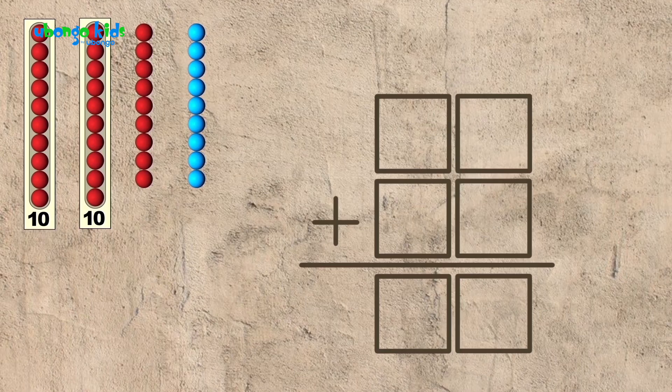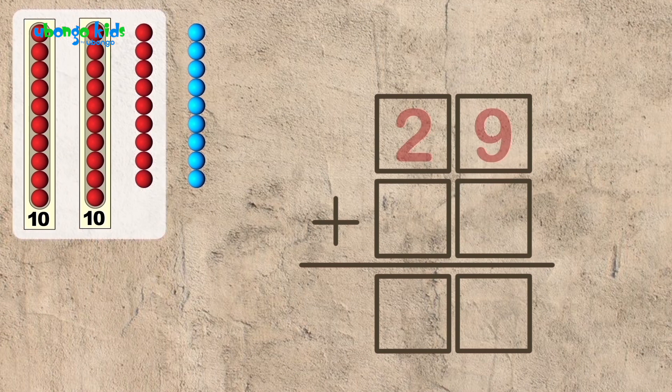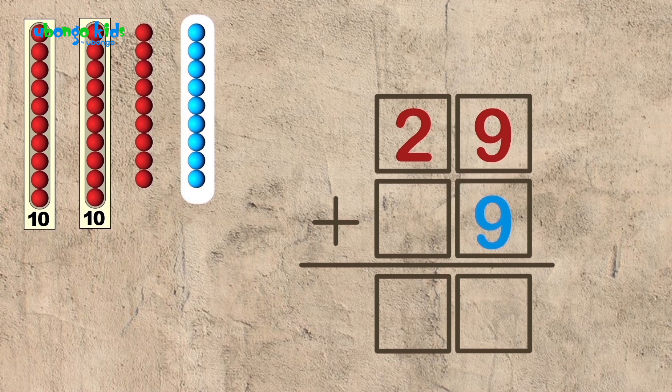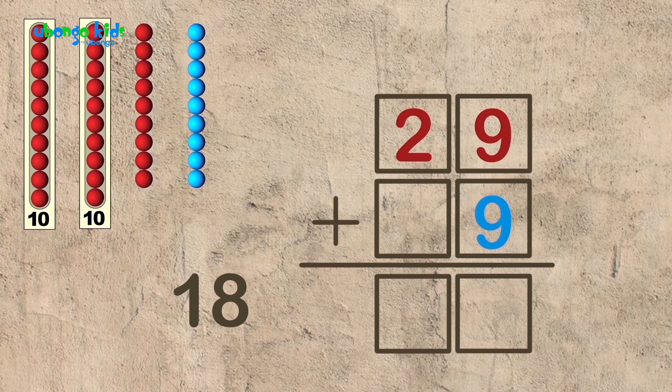Let's set it up as an equation. What should we put here? We have twenty-nine red beads plus nine blue beads. Nine plus nine equals eighteen. Eighteen! That's right.